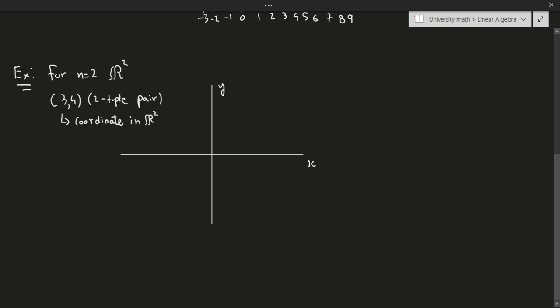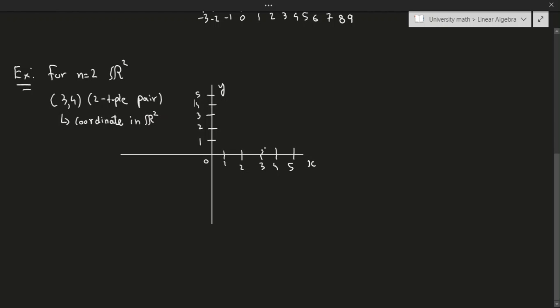R2 just means that we now have two dimensions — we have the x-axis and the y-axis — so we can describe a point using a set of coordinates. Labeling the axes from 0 through 5, the point (3, 4) would be located right here, roughly speaking. So this point right there would be (3, 4).